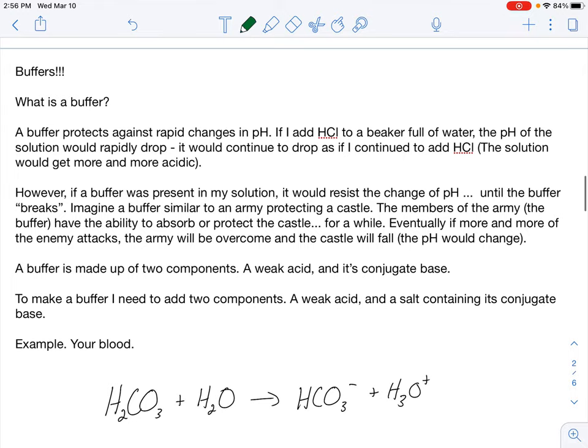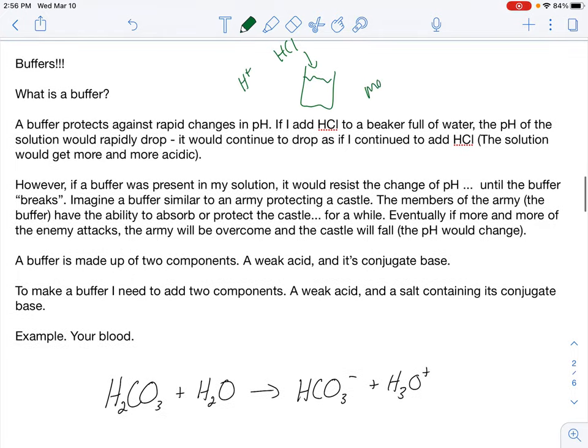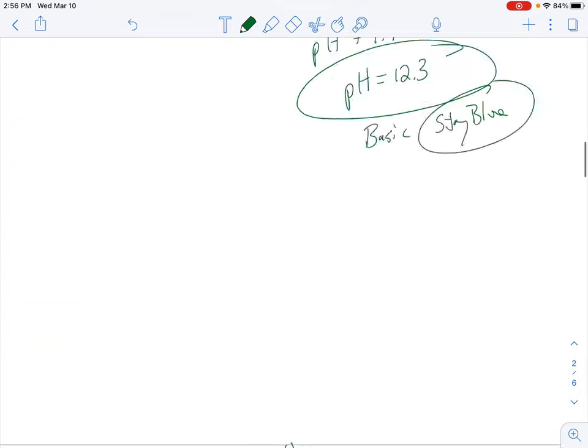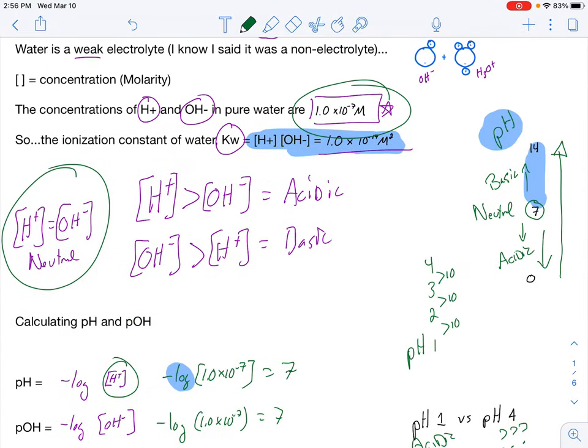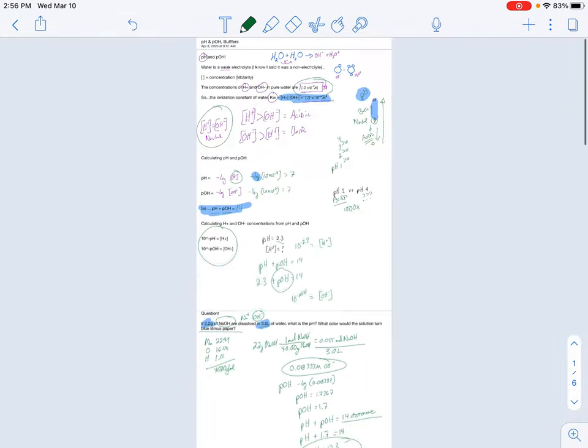All right. Second half of your lecture is on buffers. I wrote a bunch of stuff out here. And this will hopefully help you out. What is a buffer? A buffer protects against rapid changes in pH. So if I have a beaker here and I add HCl, what would you expect the pH to actually do? Well, the pH would start to drop. You're adding hydrogen ions, so you're making this more acidic. If you're making it more acidic, your pH would go lower and lower and lower. Remember, the lower you go, the more acidic something is.